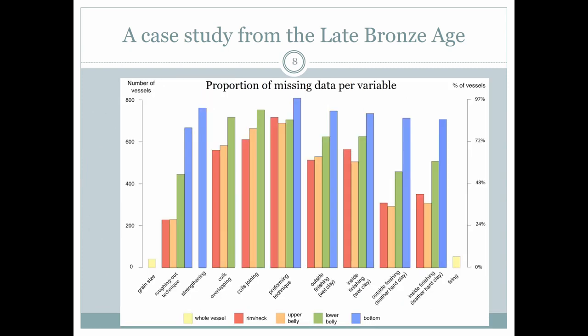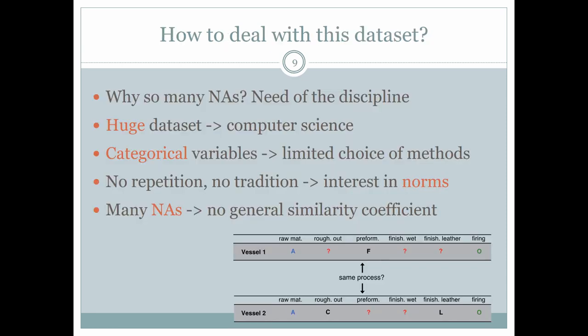A graph shows the proportion of missing data: in most of the technical descriptors this proportion is very high and concerns nearly every variable, so it is not possible to just delete some of them. The discipline is inspired by ethnographic studies in which many details of the manufacturing process are observed and can vary and be socially significant. Archaeological databases imitate the ethnographic ones when access to the data is of course very reduced. This explains the wide size of the dataset, and its mining involves computer science.